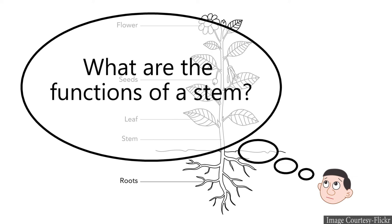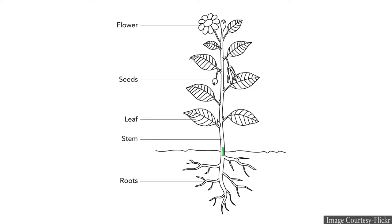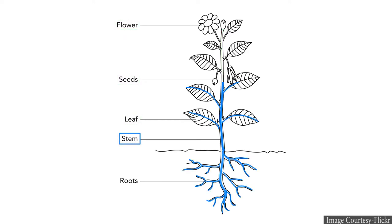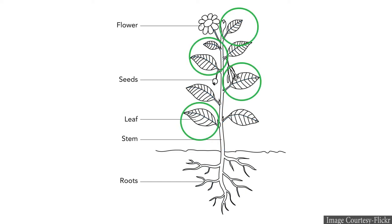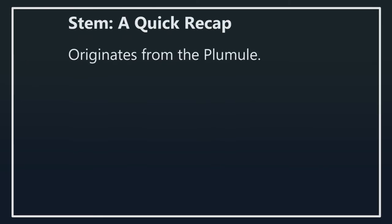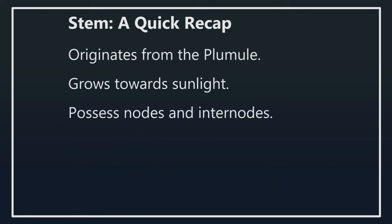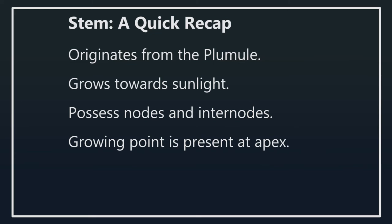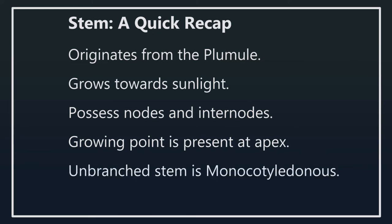Now, what are the functions of a stem? Stems produce branches, leaves, flowers, and fruits. The stem also transports water and minerals from roots to different parts of the plant, and food produced by leaves is transported via the stem. A quick recap: the stem originates from the plumule, grows towards sunlight, possesses nodes and internodes, and the growing point is at the apex. Unbranched stems are in monocotyledons; branched stems are in dicotyledons.